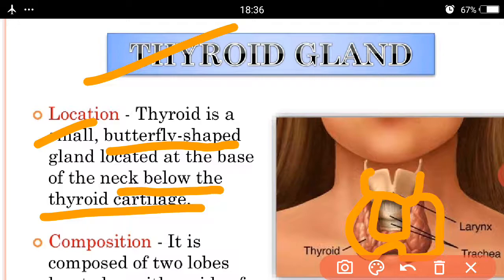The larynx is made up of nine cartilages, and at the base of that cartilage, our thyroid gland is present.